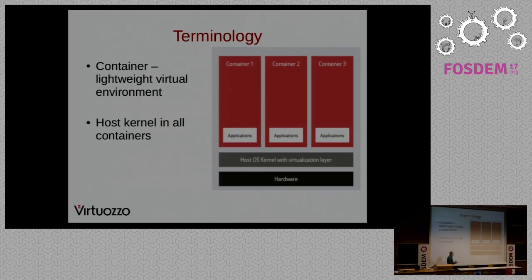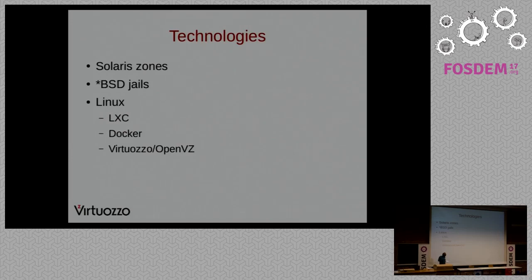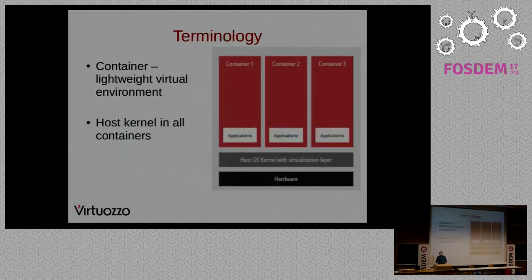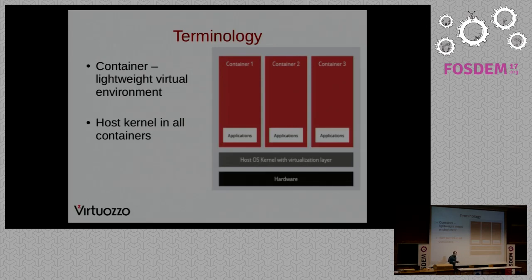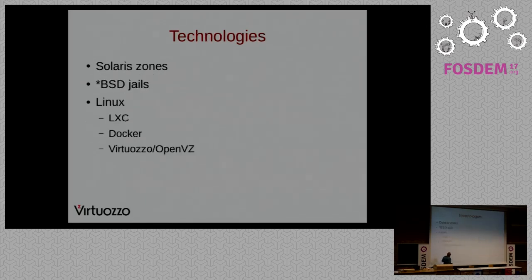Lightweight, if we compare it with virtualization via hypervisor. When you create a heavy virtual machine — heavy meaning the machine emulates a CPU, RAM, PCI, and other stuff — a container virtualization is almost a virtual machine that runs on the same kernel. For example, if you run Linux, you can run Linux containers but can't run something else like Solaris or BSD.